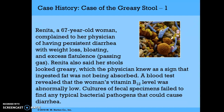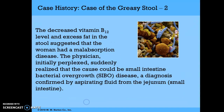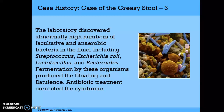Case history: Renita, a 67-year-old woman, complained of persistent diarrhea with weight loss, bloating, and excess flatulence. Her stools looked greasy — a sign that ingested fat was not being absorbed — and a blood test revealed abnormally low vitamin B12 levels. Cultures of fecal specimens failed to find typical bacterial pathogens. The decreased vitamin B12 and excess stool fat suggested malabsorption disease. The physician realized the cause could be small intestine bacterial overgrowth (SIBO), confirmed by aspirating fluid from the jejunum. The lab found abnormally high numbers of facultative and anaerobic bacteria, including Streptococcus, E. coli, Lactobacillus, and Bacteroides — whose fermentation produced the bloating and flatulence. Antibiotic treatment corrected the syndrome.